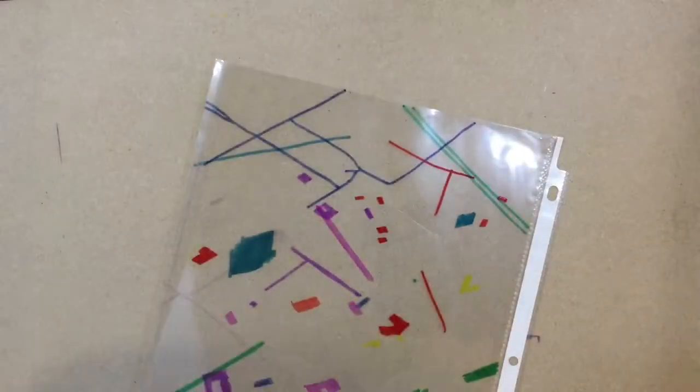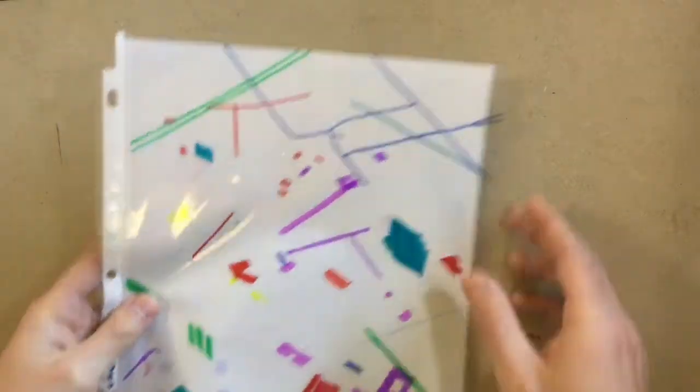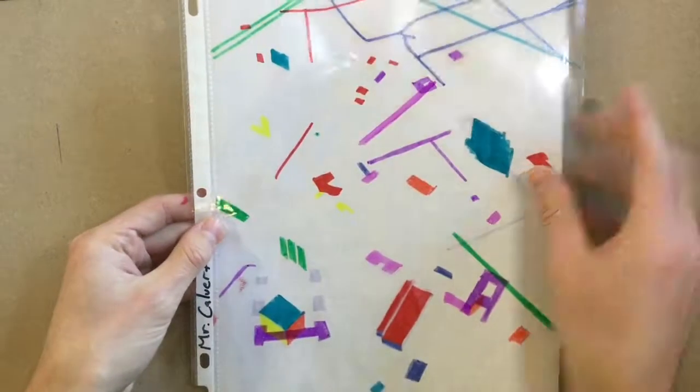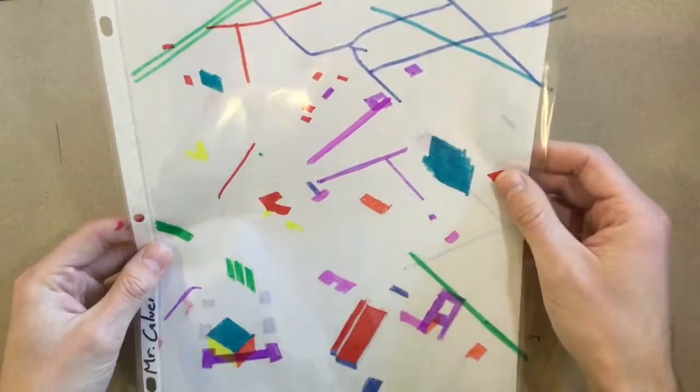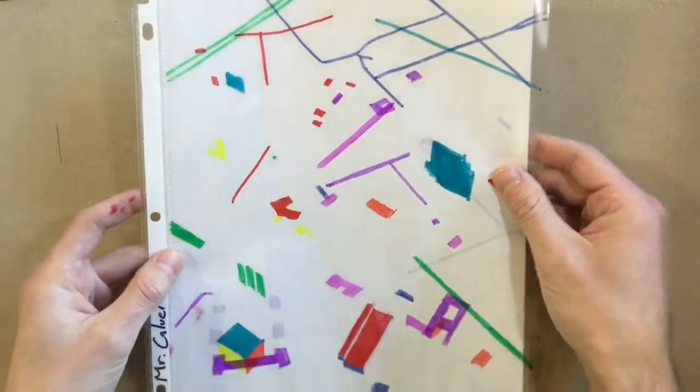You can see how this is starting to build up all those shapes. We're getting different layers and overlapping. We're going to do one more day in the next class of adding some more of these shapes and colors. All right.